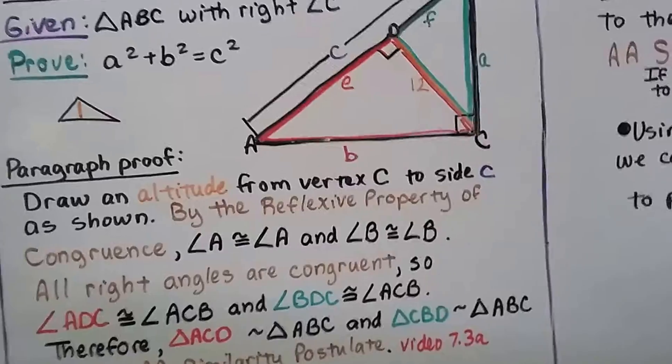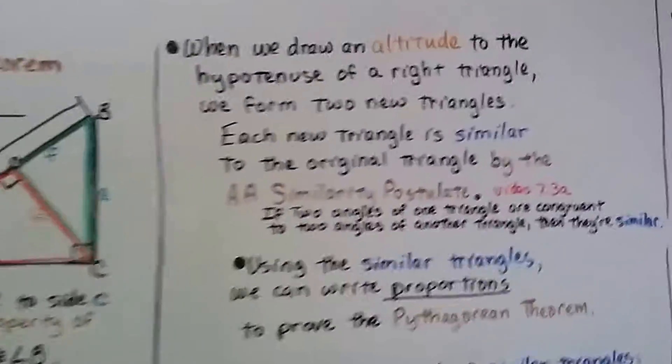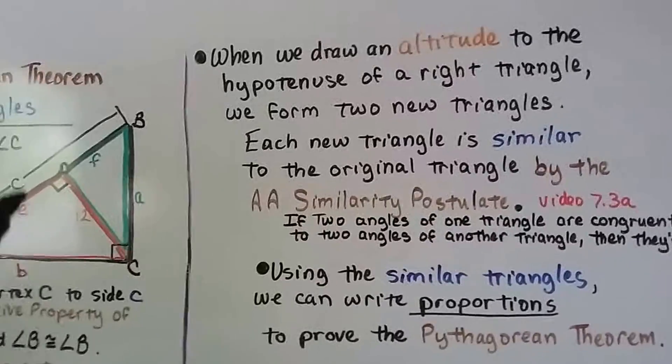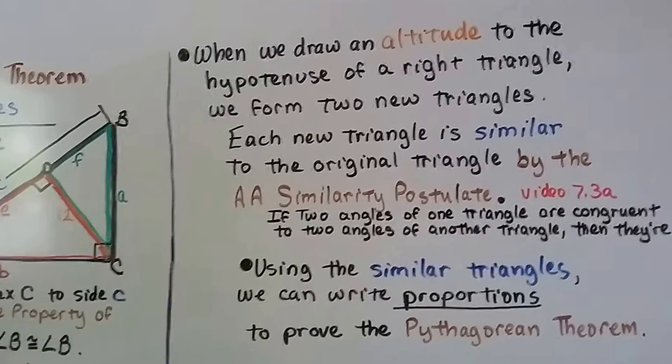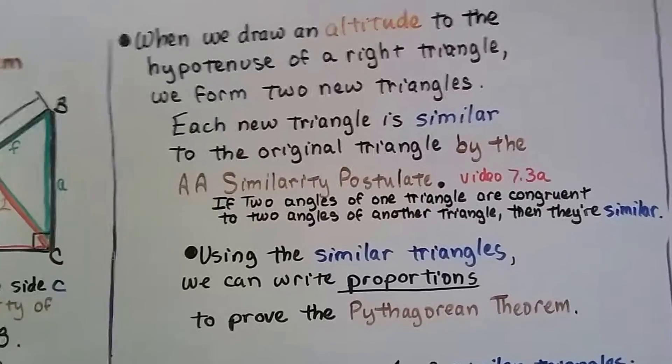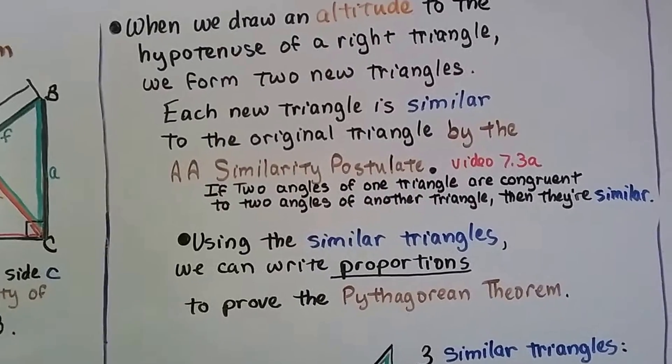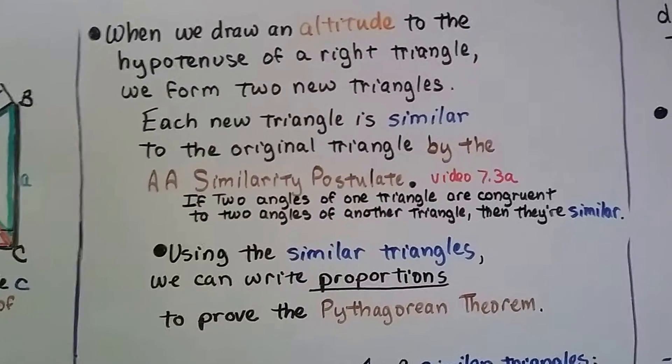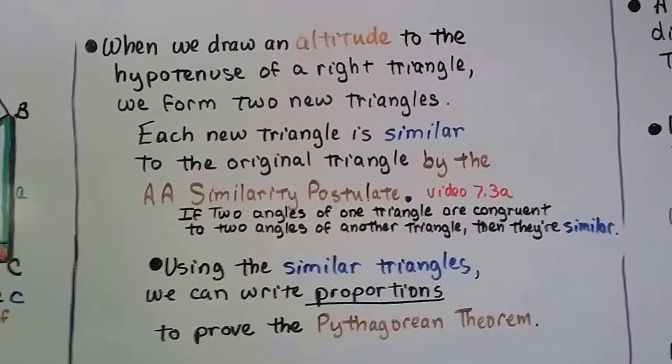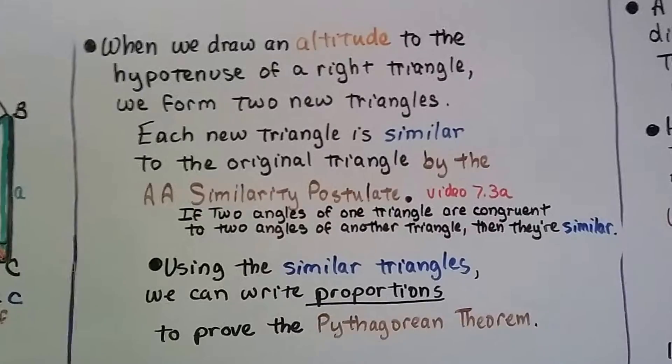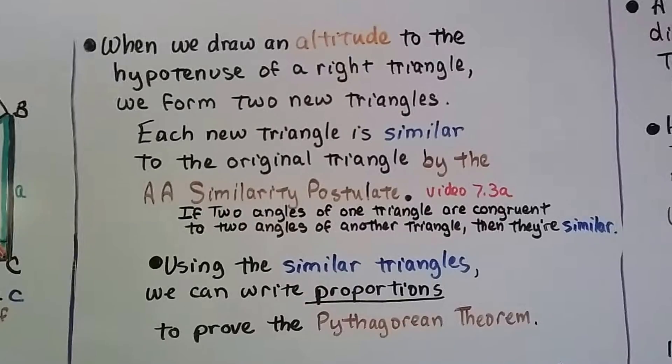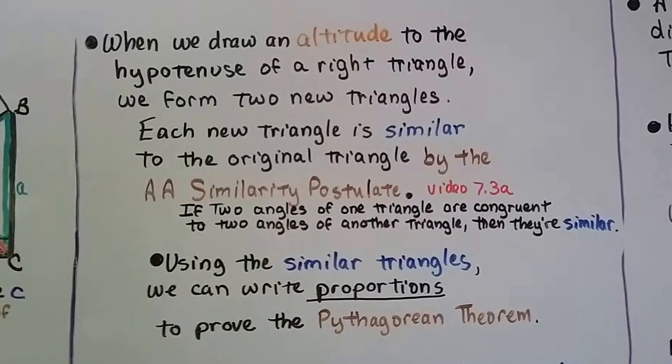That's the angle angle similarity postulate. So when we draw an altitude to the hypotenuse of a right triangle, we form two new triangles. Each new triangle is similar to the original triangle by the AA similarity postulate. We learned that in the first part of this lesson, 7.3a. If two angles of one triangle are congruent to two angles of another triangle, then they're similar.